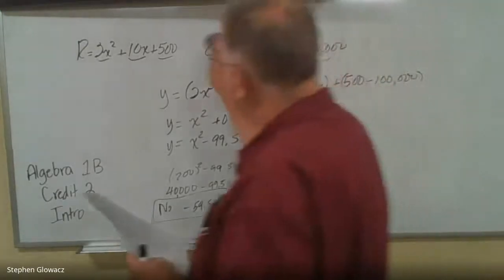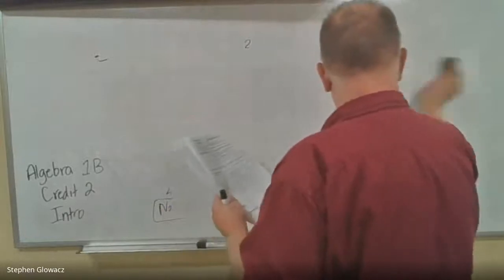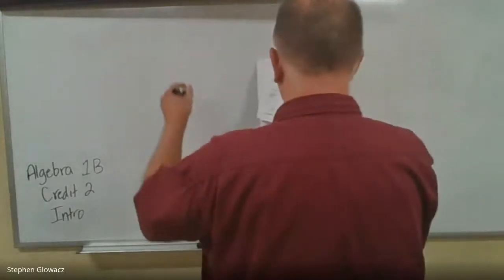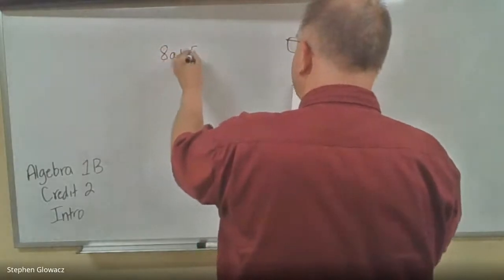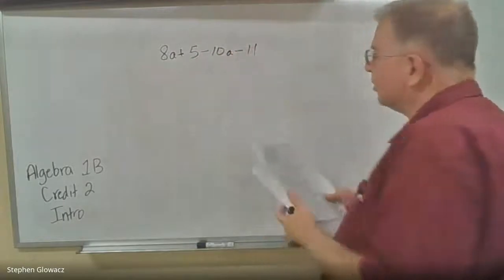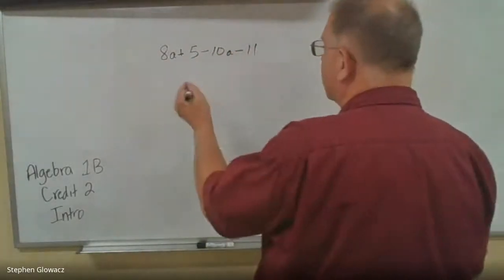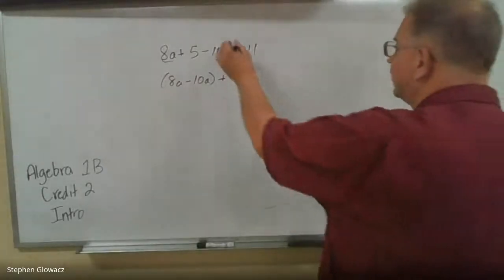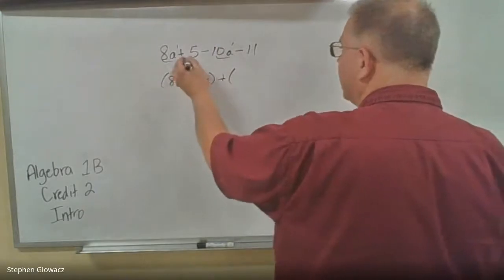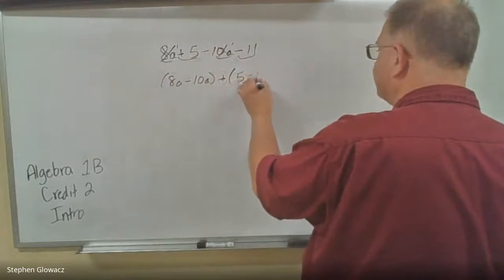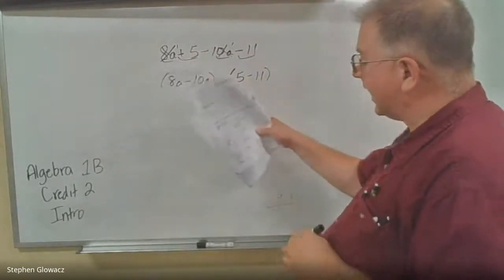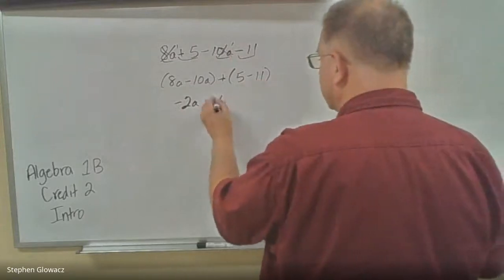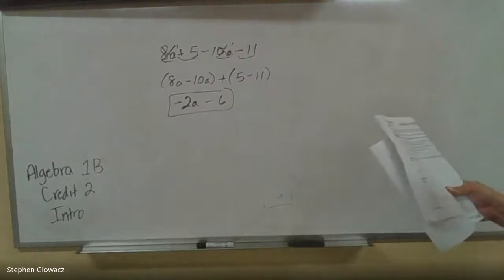I'm going to turn over to page six, and we're going to be going over some combining like terms. So number four there on page six, we've got 8A plus 5 minus 10A minus 11. So we always want to combine the like terms, or group the like terms. So we have 8A minus 10A. Remember, like terms means same variable with same exponent. So there's no exponents on the A's, we just assume it's one, but we don't need to write it. So that takes care of the A's. The constants, we've got 5 minus 11. So working this out, we have 8A minus 10A, which would give us negative 2A. And then 5 minus 11, which gives us negative 6. So we end up with negative 2A minus 6.